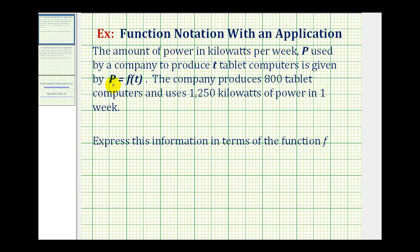So the power used is 1250 kilowatts. We have 1250 must equal F of T, where T is the number of computers. So in this case, we'll have F of 800. We've now expressed the information in this application problem using function notation.